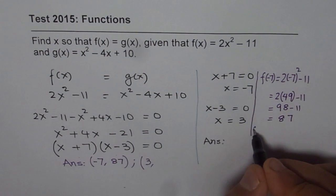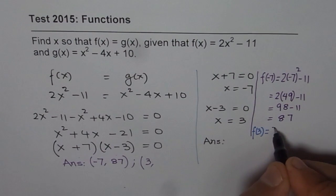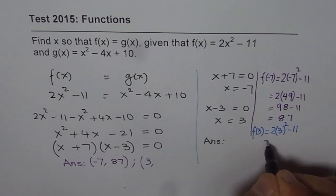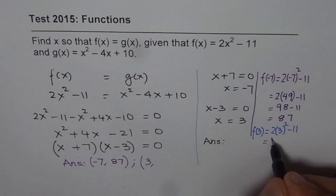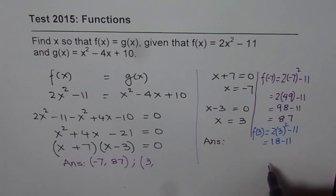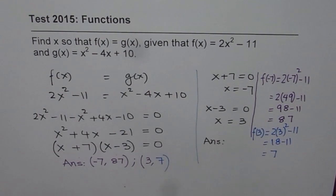So we have f of 3 equals 2 times 3 squared minus 11, which is 2 times 9, that's 18, and 18 minus 11 will give us 7. So the y point is 7.